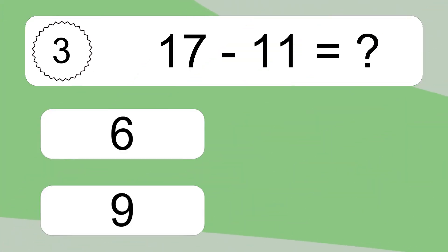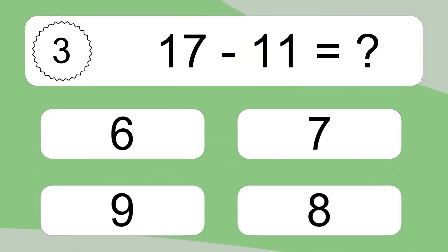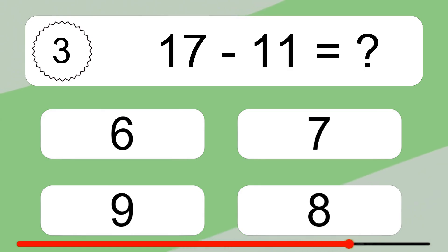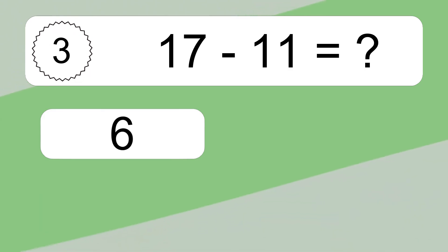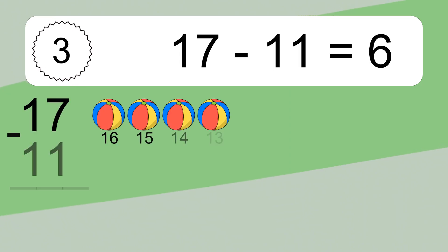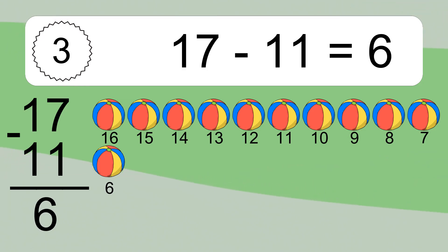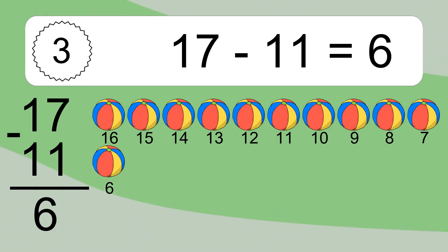17 minus 11 equals what? 17 minus 11 equals 6. Let's count it! 16, 15, 14, 13, 12, 11, 10, 9, 8, 7, 6.